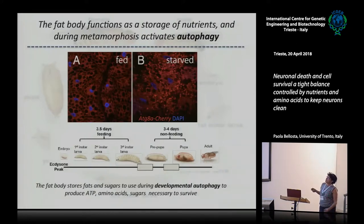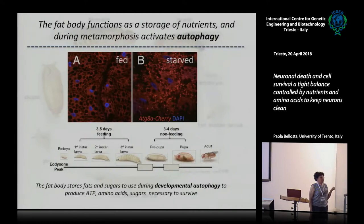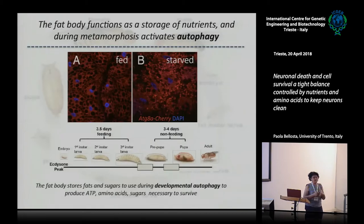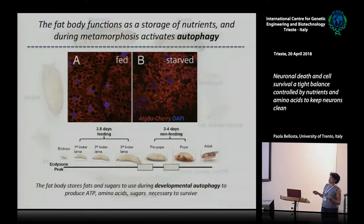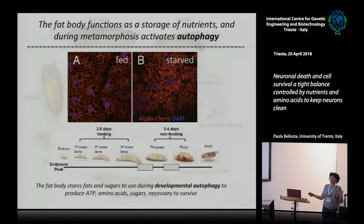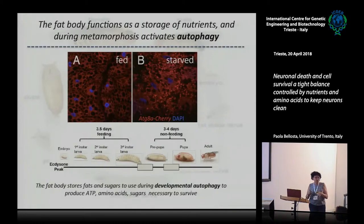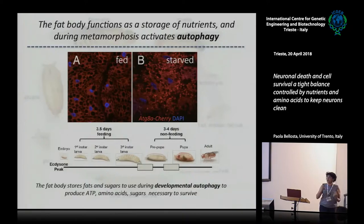Why am I talking about the fat body? Because in my data, autophagy — which you probably already know — is a mechanism that rescues neurodegenerative diseases by cleaning the neurons, keeping them healthy, and degrading the aggregates that many neurodegenerative diseases produce in neurons. However, autophagy is also fundamental for the animal to survive metamorphosis. During metamorphosis, the fat body releases through autophagy all the nutrients necessary for the animal to survive, because they must go three days without eating.